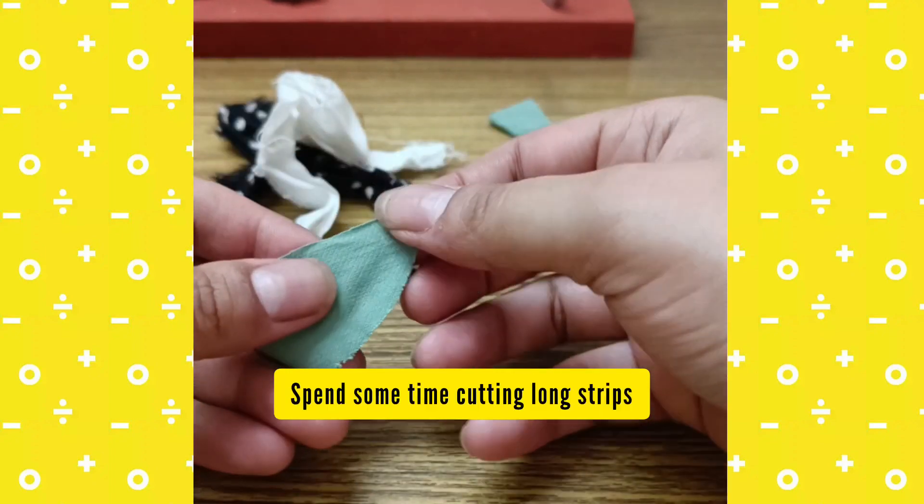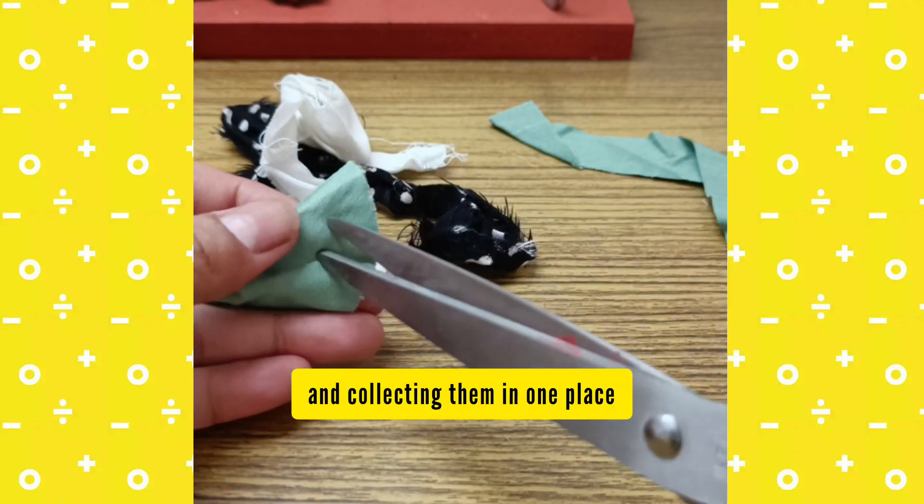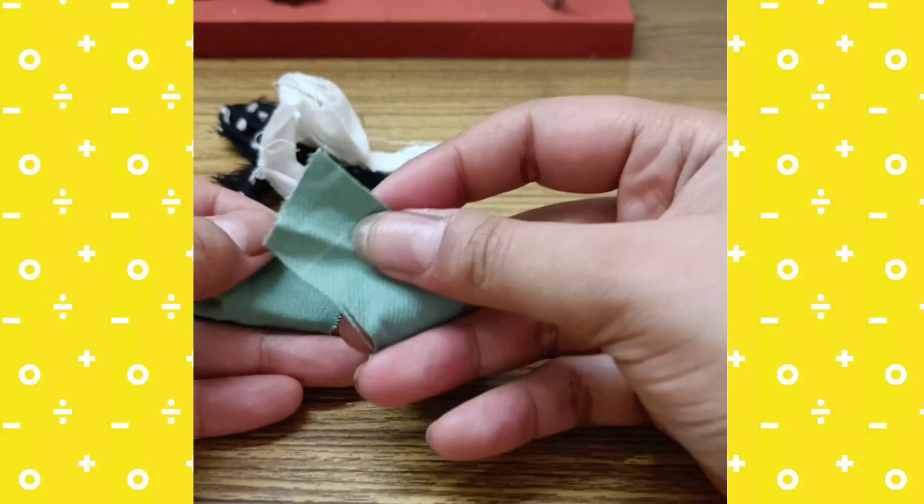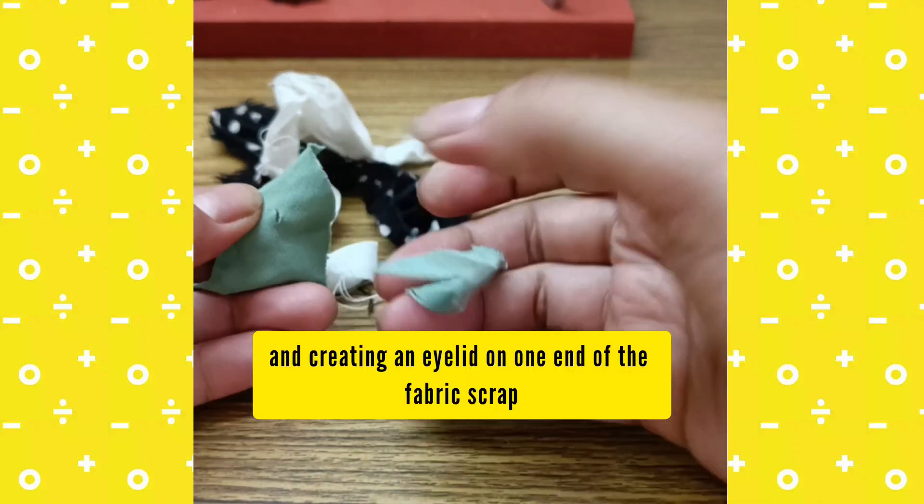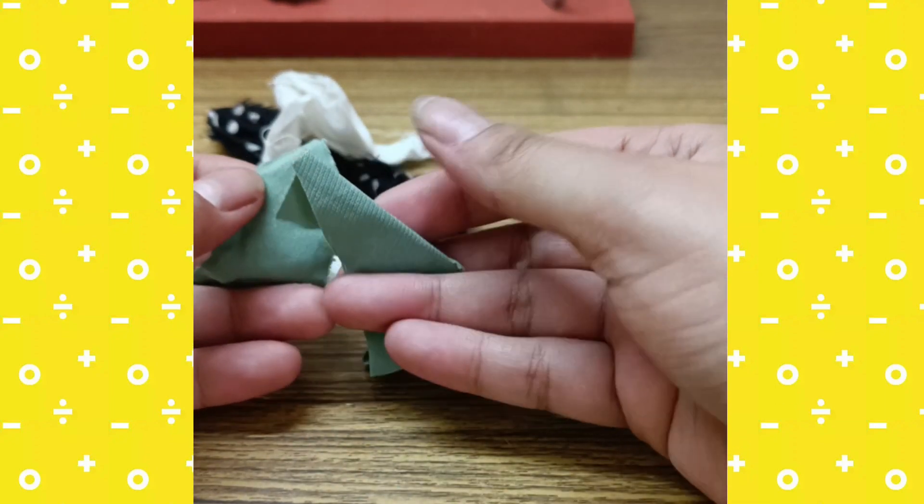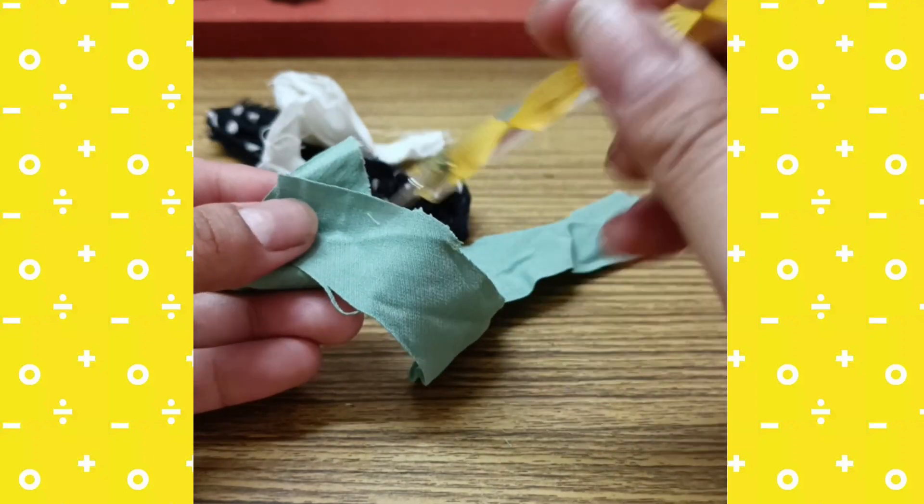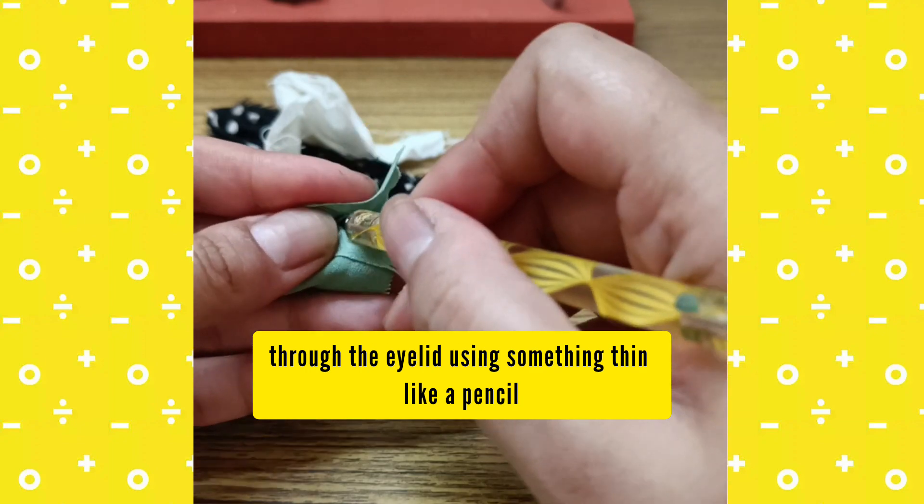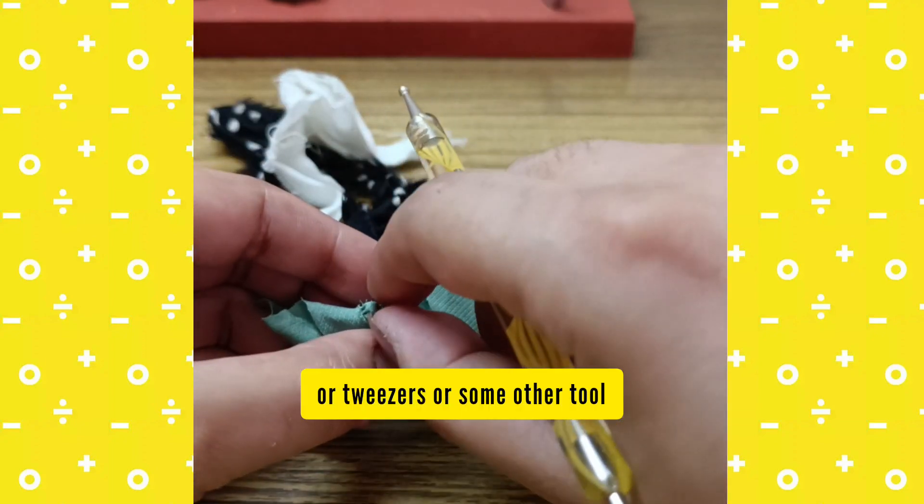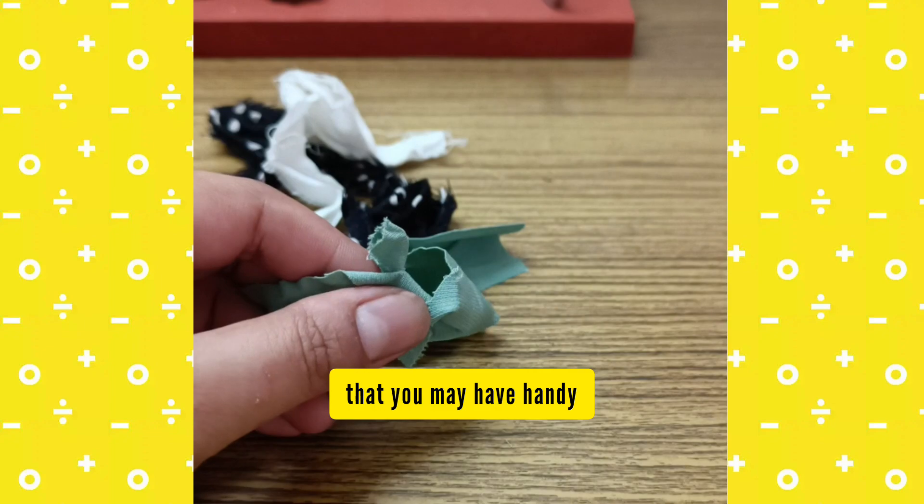Spend time cutting long strips and collecting them in one place, then taking your scissors and creating an eyelid on one end of the fabric scrap. Push the second strip through the eyelid using something thin like a pencil or tweezers or some other tool that you may have.